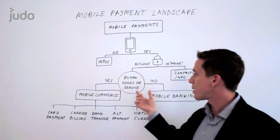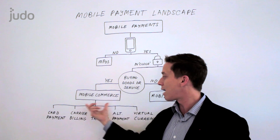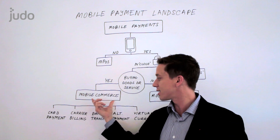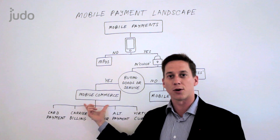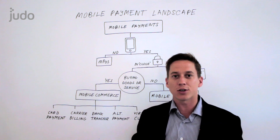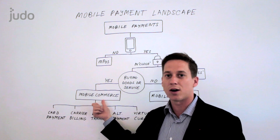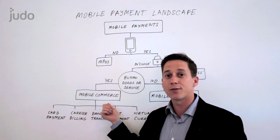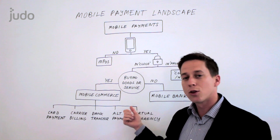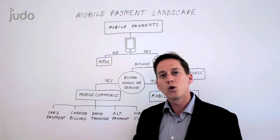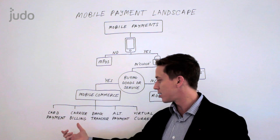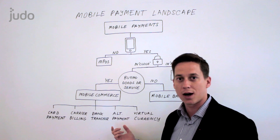But if yes, you are buying a good or service — we're now talking about mobile commerce, or m-commerce. This is exactly where Judo really focuses, and for the most part when people are comparing e-commerce to mobile commerce, this is what we're talking about. Under mobile commerce, the question really becomes: who has the customer account? And you can break it down into five basic categories of mobile commerce.